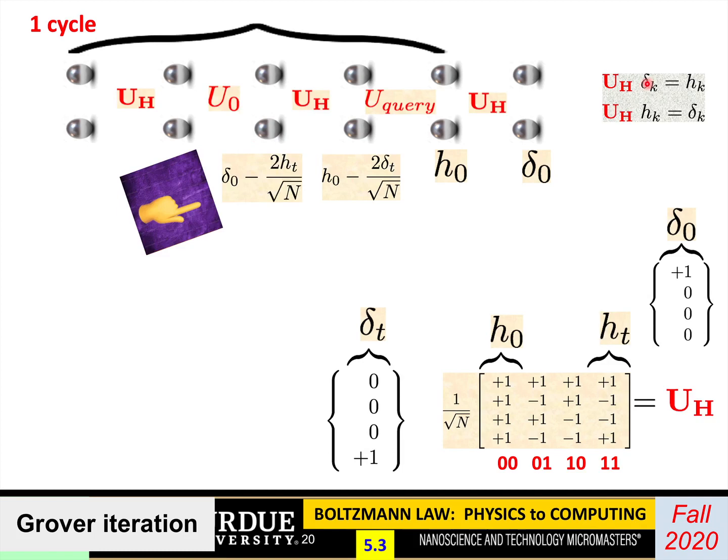Next, we have the Hadamard acting on it. What does that do? As we discussed, Hadamard takes delta and turns it into H, takes H and turns it into delta. So H0 now becomes delta 0, and delta t becomes H t. It's very simple.